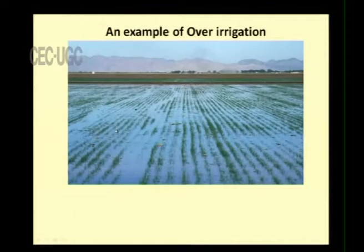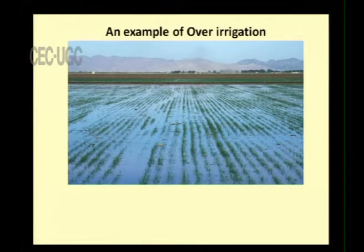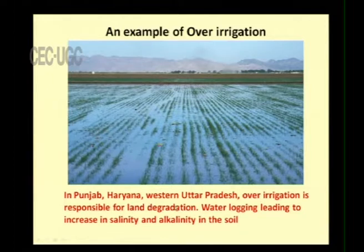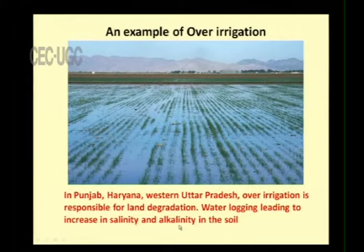An example of over-irrigation: because the land is cultivated year after year, after some time it will become saline. In Punjab, Haryana and Western Uttar Pradesh, over-irrigation is responsible for land degradation and water logging. Water logging leads to an increase in salinity and alkalinity in the soil, and therefore the soil will become infertile.